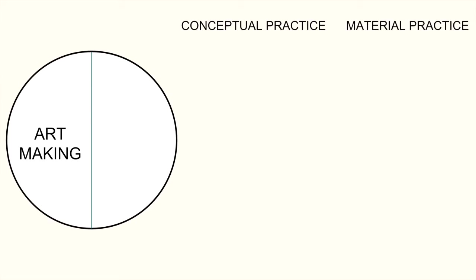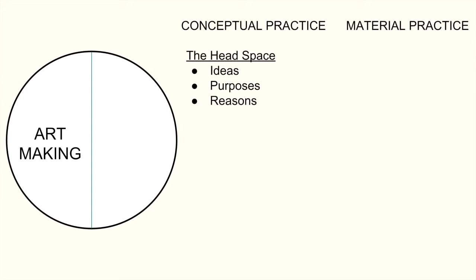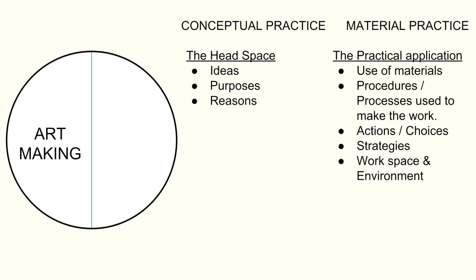There are two main areas within art making: conceptual practice and material practice. Conceptual practice essentially deals with the headspace — concepts are basically ideas, the purpose behind an artwork, the reason why an artwork was made, the decision-making happening inside the artist's head. Whereas material practice deals with the practical application of making the artwork itself: the use of materials, the procedures and processes used, actions that the artist makes, choices, strategies, and also the physical place in which the artwork is made.